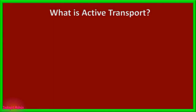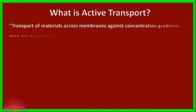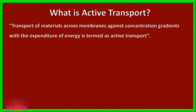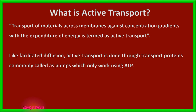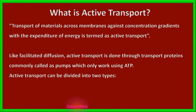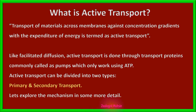What is active transport? Transport of materials across membranes against concentration gradients with the expenditure of energy is termed as active transport. Like facilitated diffusion, active transport is done through transport proteins, commonly called pumps, which only work using ATP. Active transport can be divided into two types: primary transport and secondary transport. Let's explore the mechanism in more detail.